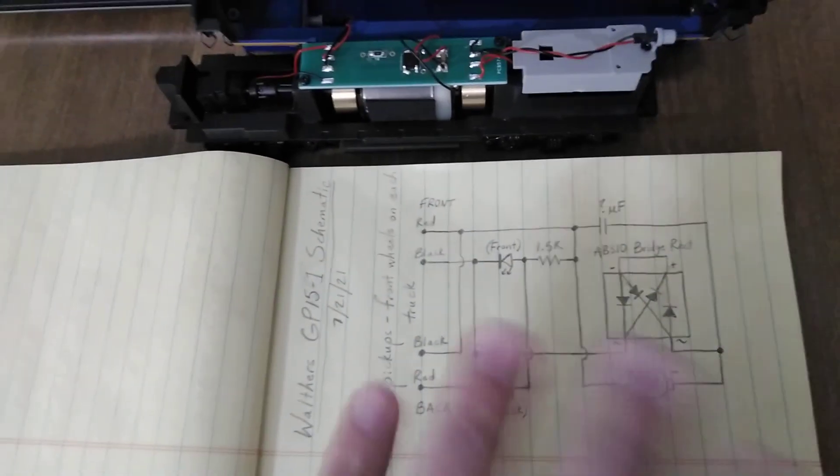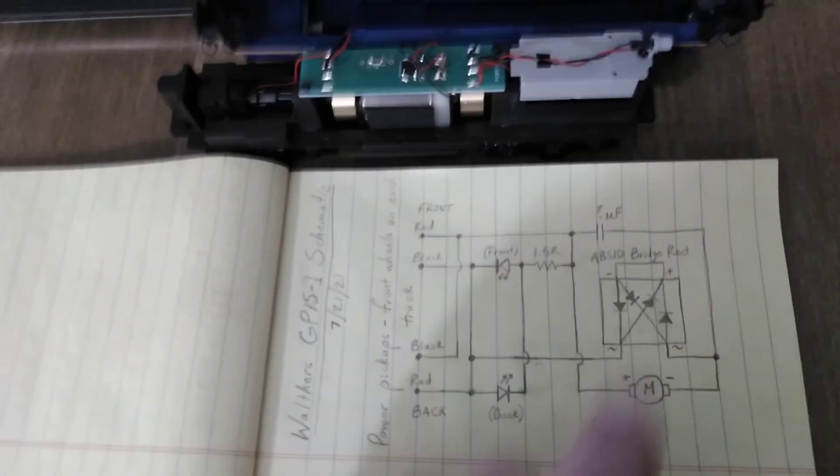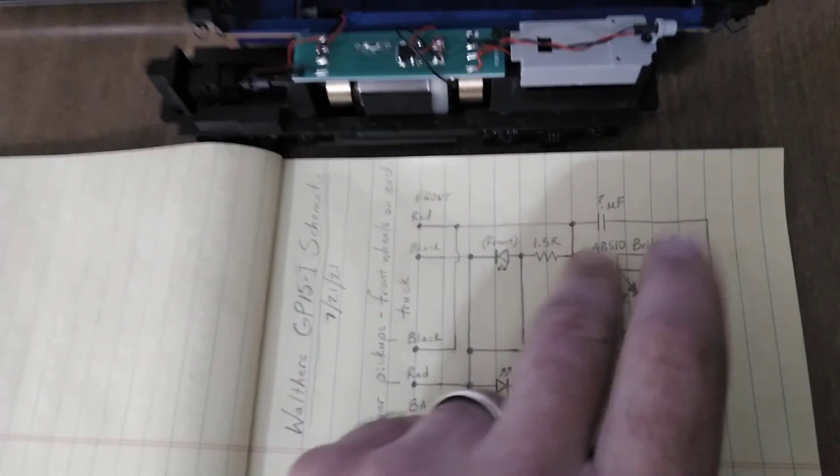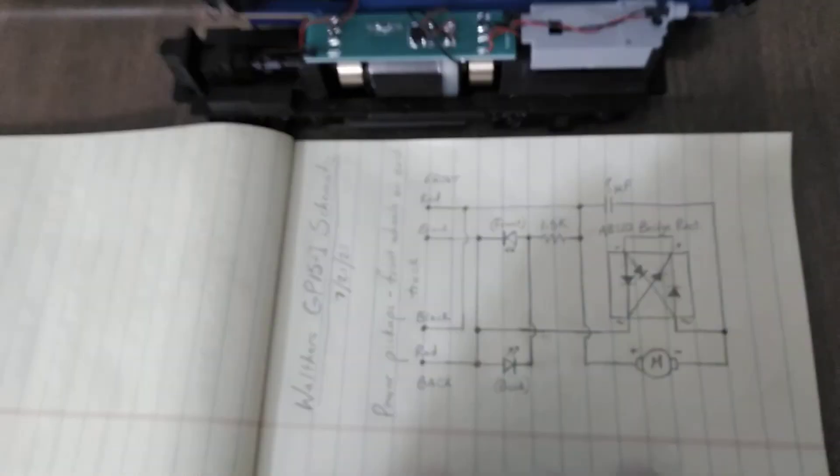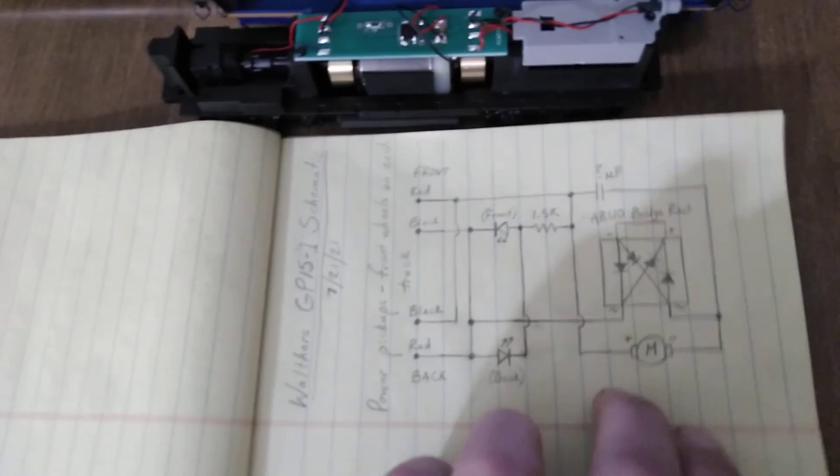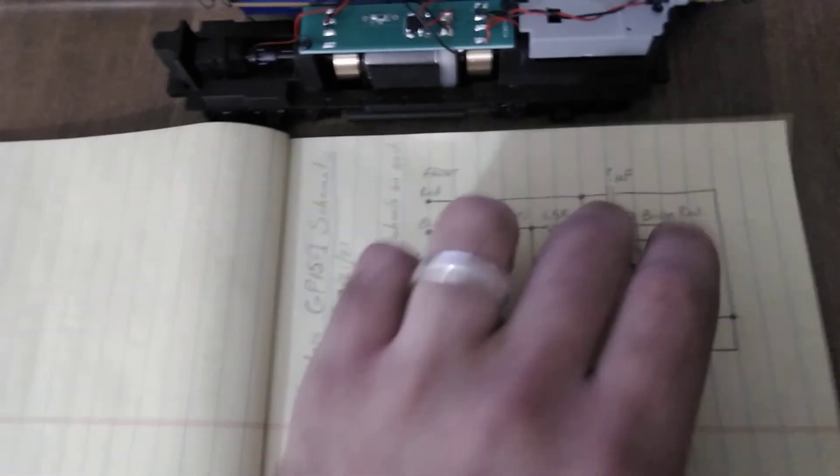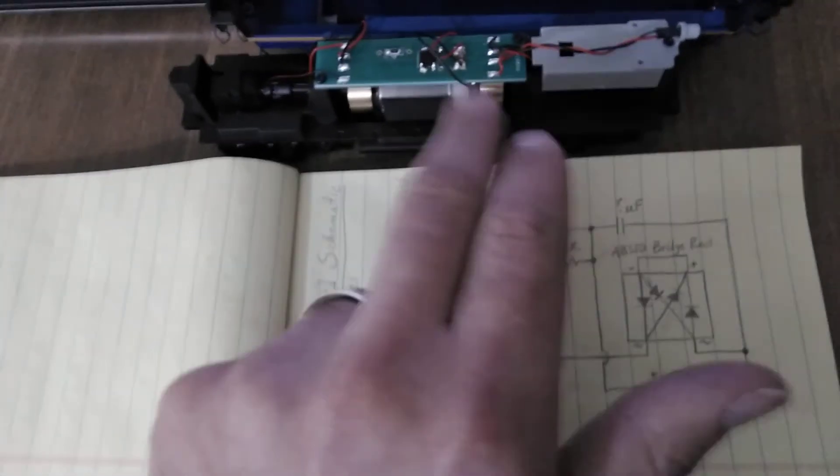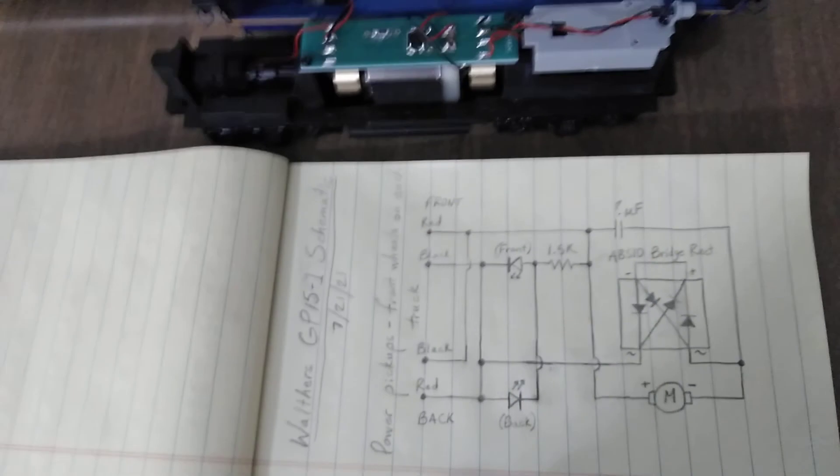And there's also a capacitor here which I think is for smoothing purposes for the motor—it kind of takes out the transients created by the inductive load of the motor. So that's what's going on there. I couldn't really measure it in circuit, you would have to desolder it and take it off. So that's why there's a question mark there. But yeah, that's what's going on in this thing.